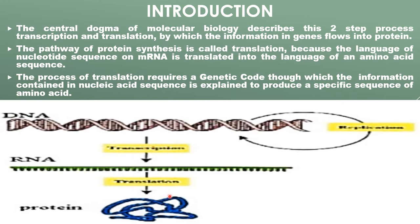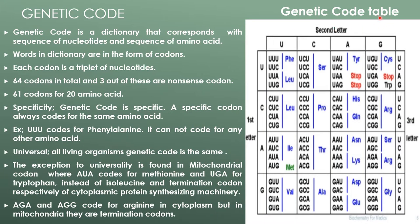By transcription and translation, the information in the gene flows to protein. The pathway of protein synthesis is called translation because the language of nucleotide sequence on the mRNA is translated into a language of amino acid sequence. The process of translation requires a genetic code, through which information contained in nucleic acid is used to produce a specific sequence of amino acids. Genetic code is a dictionary that corresponds with the sequence of nucleotides and the sequence of amino acids.